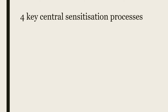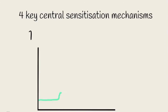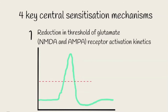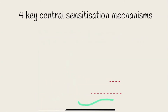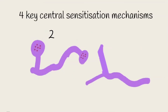I'm now going to go over the four key central processes that can cause this sensitization. The first is a reduction in the threshold of glutamate receptor activation kinetics, which increases the excitability of the neurons. Receptors such as NMDA or AMPA receptors are involved in this process. A second mechanism is an increase in cell membrane glutamate receptor number; therefore glutamate will have a greater effect, thus increasing excitability of the post-synaptic membrane.